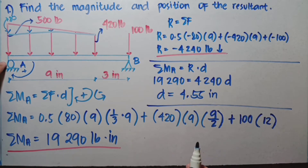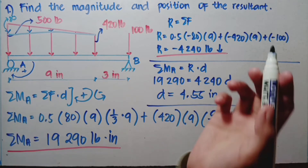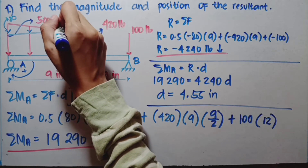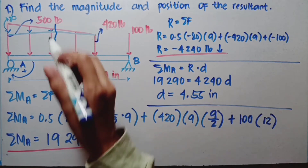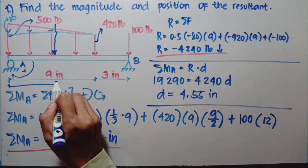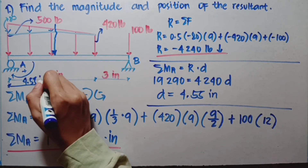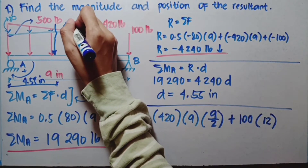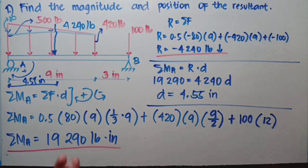Since we took the moment at A, we count 4.55 inches from A — probably around here. So from the support where we took the moment to the resultant is 4.55 inches, with a magnitude of 4,240 pounds. That is our resultant for this figure.